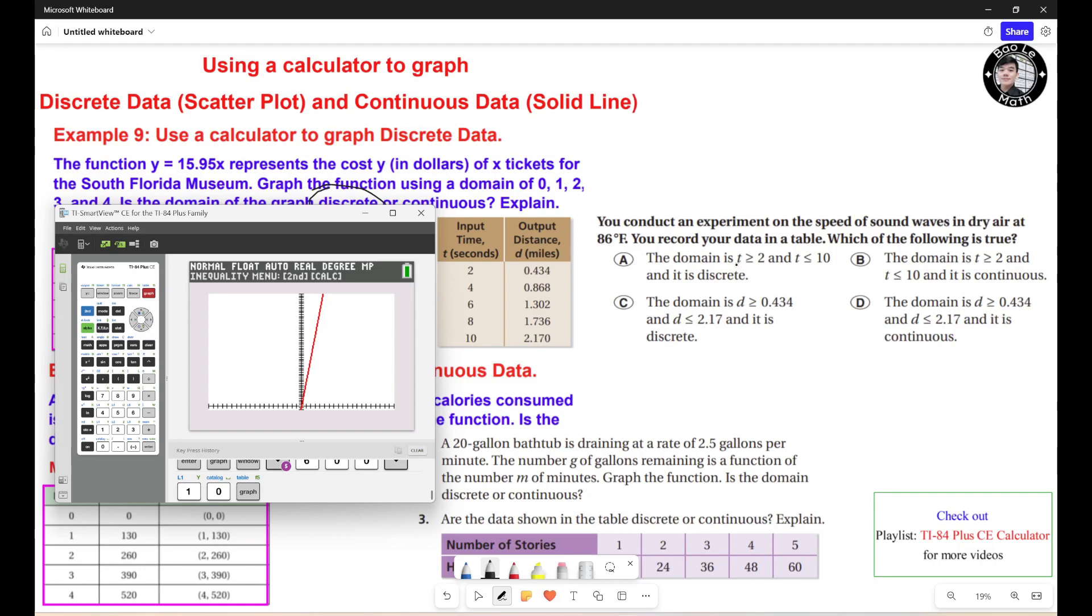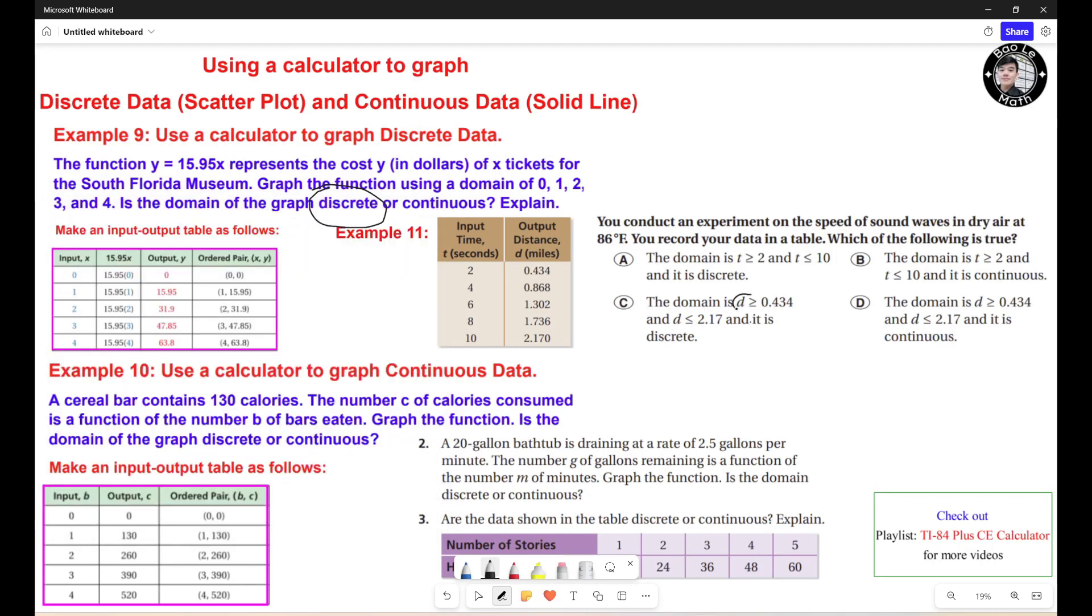Choice A: the domain is t greater than or equal to 2 and t less than or equal to 10, and it is discrete. No, it's not discrete because time could be 2.2 seconds, 2.3 seconds, could be 5 over 2 seconds. So it's not discrete. Choice B: The domain is t greater than or equal to 2 and t less than or equal to 10, and it is continuous. Yes, it's continuous. Choice C: The domain is d greater than... No. This is the range. This one is the range right here. The y value is the range. This is the domain. So this is wrong. This one wrong.